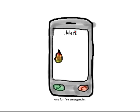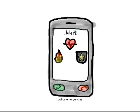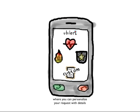The UV Alert app has four emergency buttons: one for fire emergencies, one for health emergencies, one for police emergencies, and finally a button for a custom alert where you can personalize your request with details.